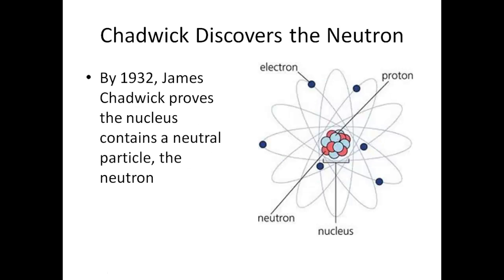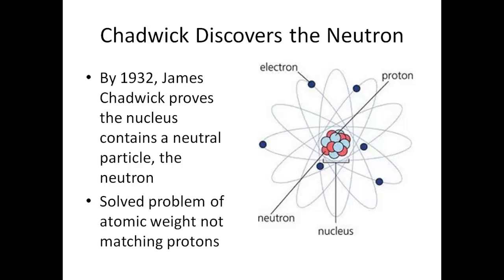By 1932, James Chadwick proves that the nucleus contains a neutral particle, which he called the neutron. With this discovery of the neutron, Chadwick was able to solve the perplexing problem of why the atomic weight of an element was not matching its number of protons.